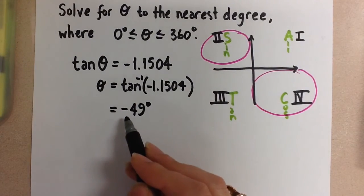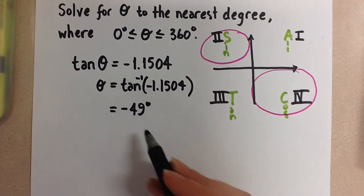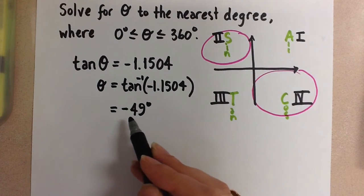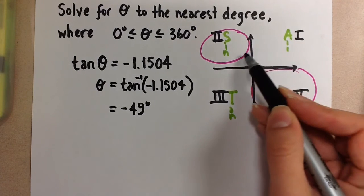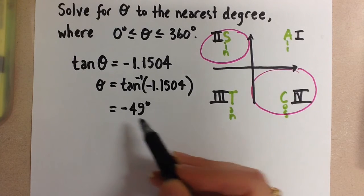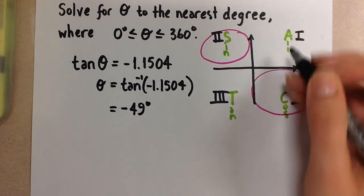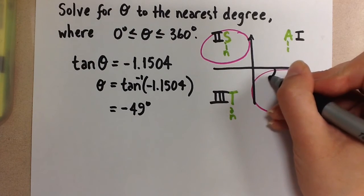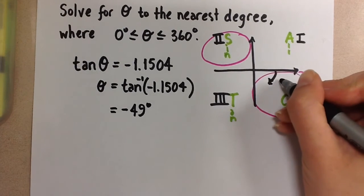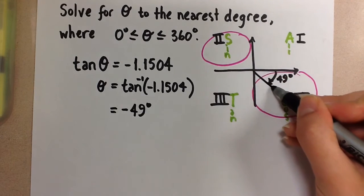Now this is a negative angle, but we can still work with this. When we calculate our trig ratios on our calculator, we don't always get positive angles, meaning we don't always get principal angles that go counterclockwise. Sometimes we get negative angles. And so if we get a negative angle, we're going to go clockwise this way from the positive x-axis.